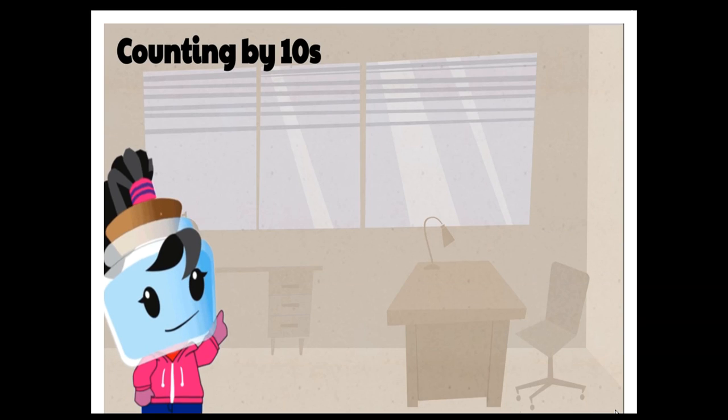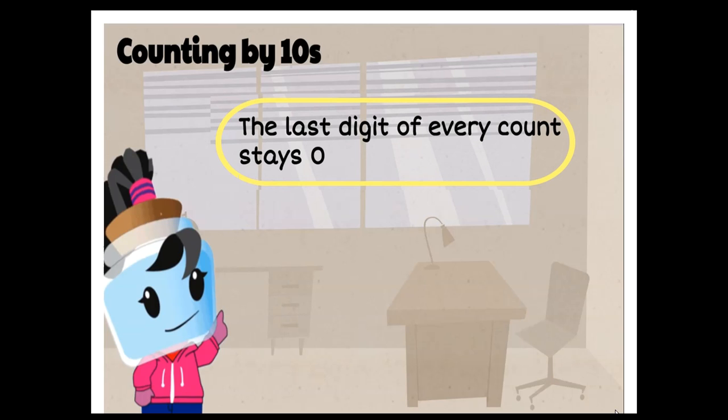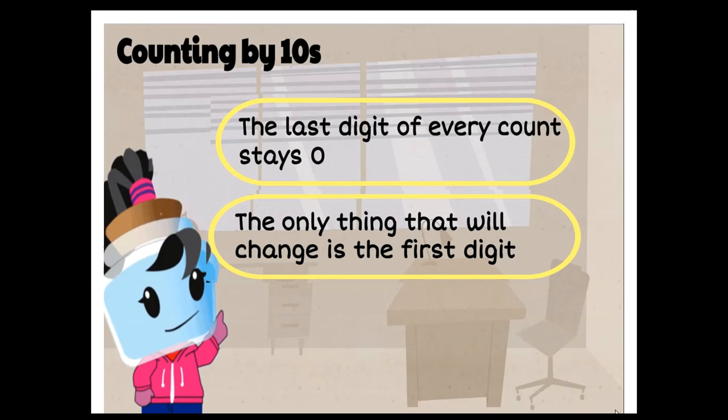Now, let's move to counting by 10s. This time, the last digit of every count stays 0. The only thing that we change is the first digit.